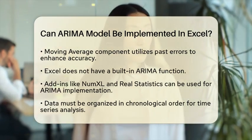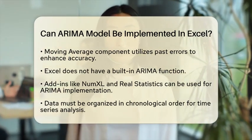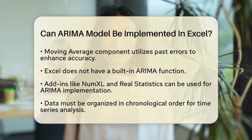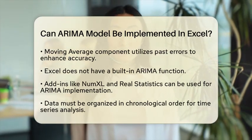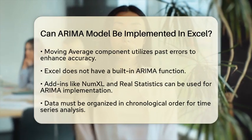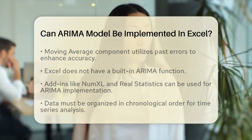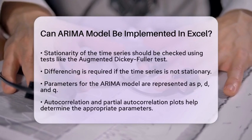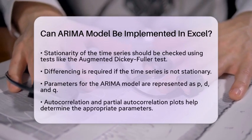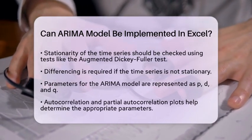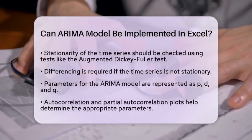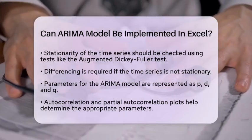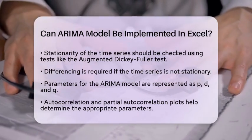Let's go through the practical steps to implement ARIMA in Excel. First, ensure your data is organized in a time series format, meaning your data should be in chronological order. Next, check if your time series is stationary. You can use tests like the augmented Dickey-Fuller test for this. If your series is not stationary, you will need to apply differencing.